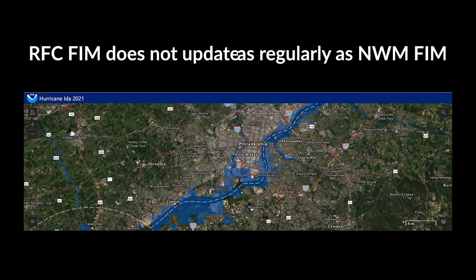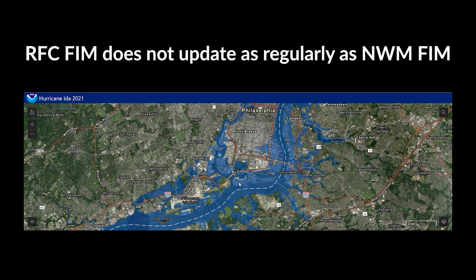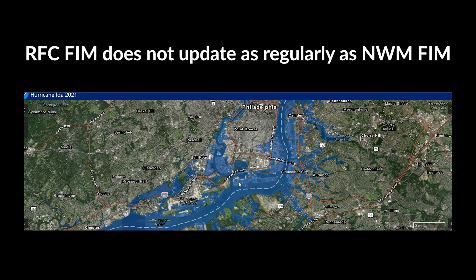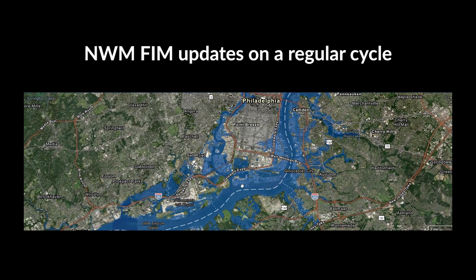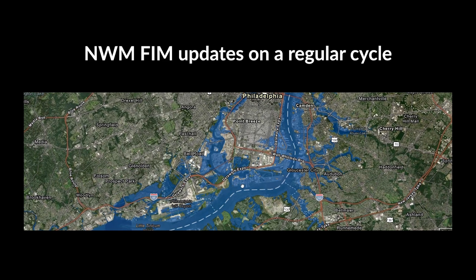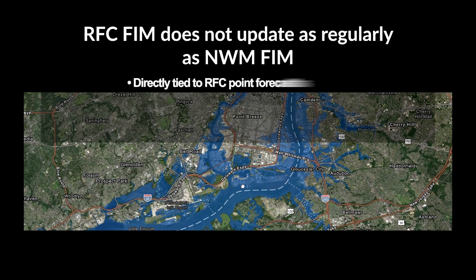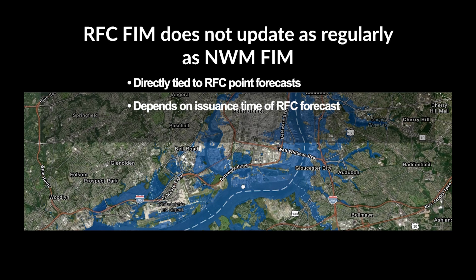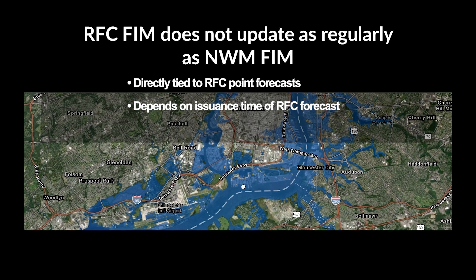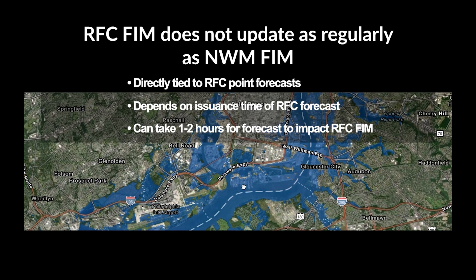While RFC FEM incorporates newly issued RFC forecasts every hour, it's important to keep in mind that the RFC forecasts which are the basis of the RFC FEM may not update as regularly. The NWM FEM updates on an automatic cycle either hourly or every six hours. Since RFC FEM is directly tied to RFC point forecasts, the updates to RFC FEM are dependent upon the issuance time of a given forecast, and it can take one to two hours for the latest forecast to be reflected in the RFC FEM service.